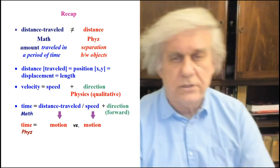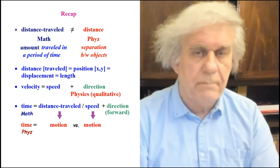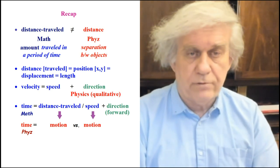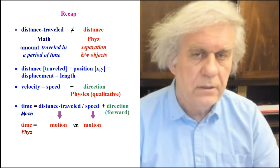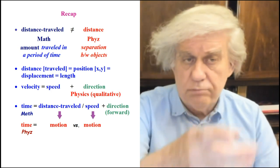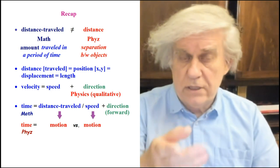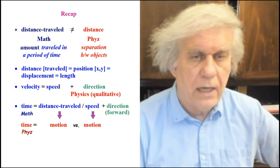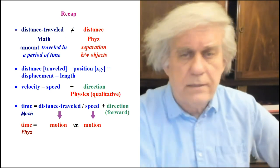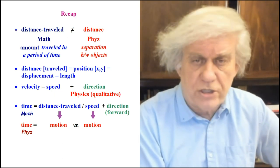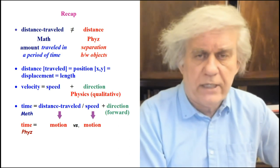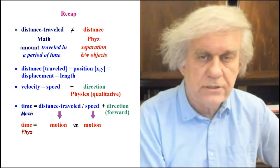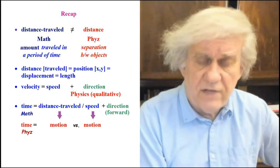Let's do a recap of what we covered these last few days. We went over distance — distance traveled, which belongs to math not physics, whereas distance separation belongs to physics because it's a qualitative concept. Distance traveled is just the amount traveled in a period of time; distance in physics is just separation, a gap between two objects. In mathematics, distance traveled equals position equals displacement equals length — all four are dynamic concepts, not static.